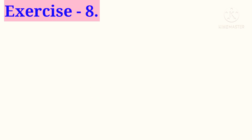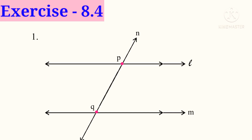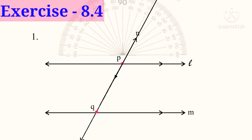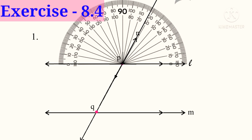Now Exercise 8.4, first problem: see the figure and measure all the angles. Extend the line N and place the protractor on the line L at the center point P. To measure the left side angle, see the upper scale: 0, 10, 20, and so on. 8 lines after 110, that is 118 degrees — the line N is showing.